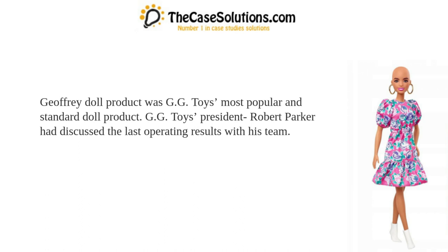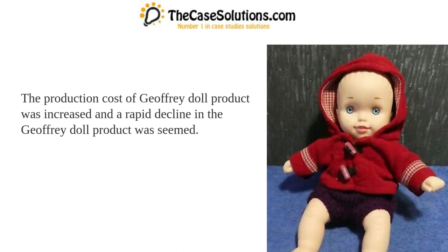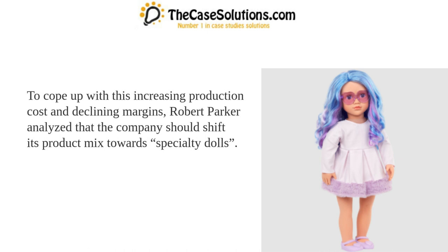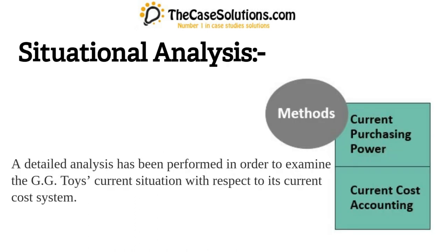The Jeffrey doll product was GG Toys' most popular and standard doll product. GG Toys president Robert Parker discussed the last operating results with his team. The production cost of the Jeffrey doll had increased, and a rapid decline in margins was observed. To cope with this, Robert Parker analyzed that the company should shift its product mix towards specialty dolls.